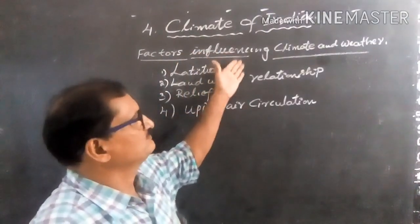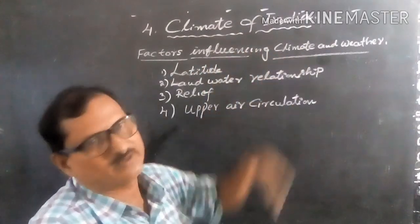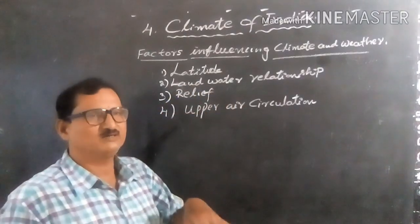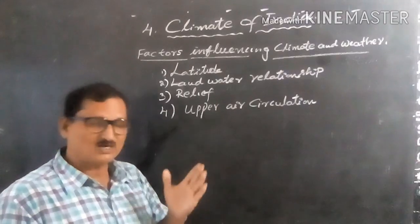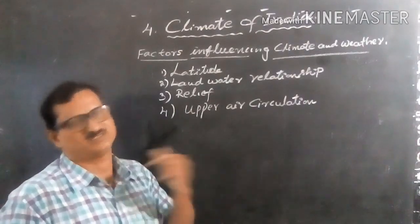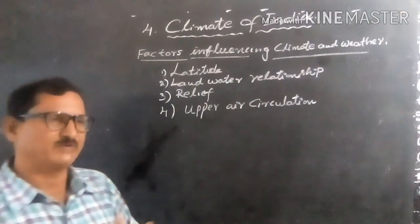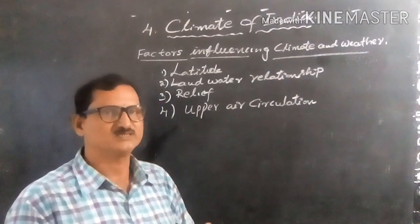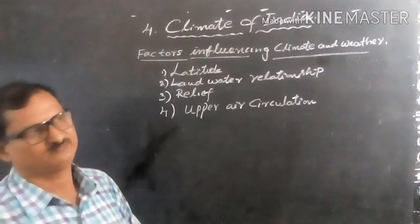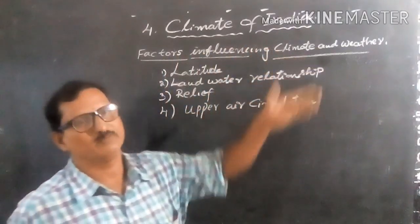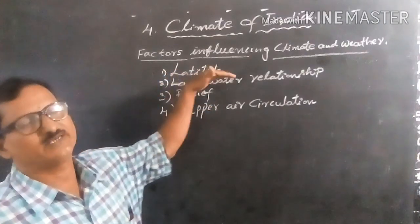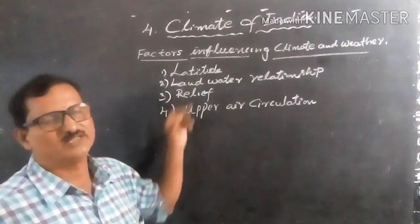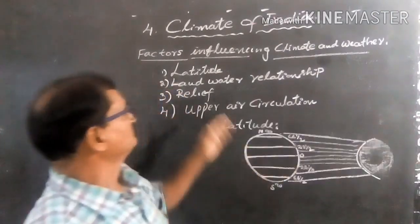Now, factors influencing climate and weather. In our India, the northern part is bounded by the Himalayas, the southern peninsula is surrounded by many seas, and many places are situated on the plains or nearby the coast and seas. The factors that influence weather and climate are: latitude, land-water relationship, relief, and upper air circulation.